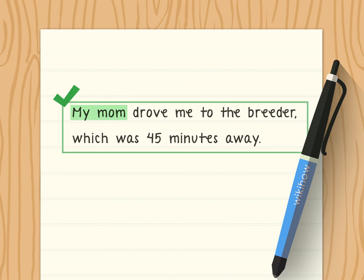Present any major characters involved in the story. Introduce any people who will play an important role in the story so the reader understands who is a part of the narrative. You don't need to introduce every character you will talk about, but it's helpful to introduce people who advance the action. For the first-person example about picking out a new puppy, you might continue: 'My mom drove me to the breeder, which was 45 minutes away.'